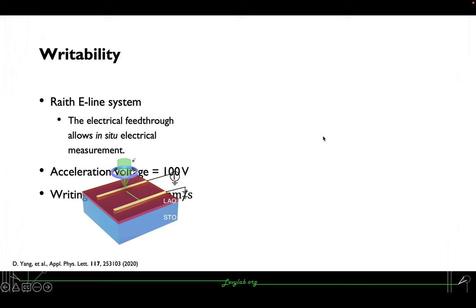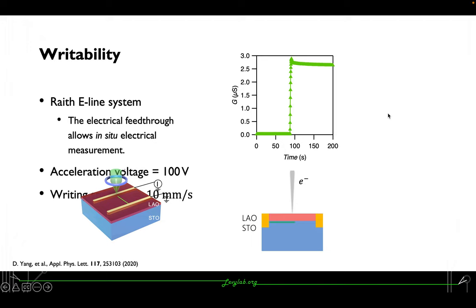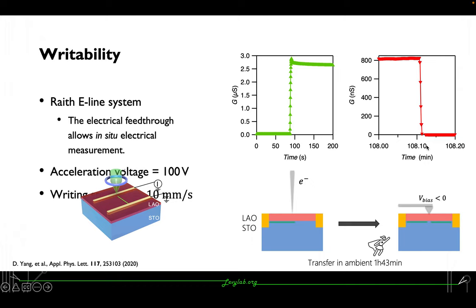With this writing, we can see a clear conductance jump from this writing process. After I transferred it into the AFM and used a negatively biased AFM tip to erase it,